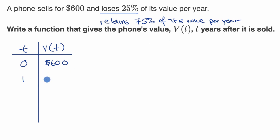So how much is it going to be worth after one year? Well, it's going to be worth $600 times 75%. Now, what about year two? Well, it's going to be worth what it was in year one times 75% again. So it's going to be $600 times 75% times 75%, and so you could write that as times 75% squared.